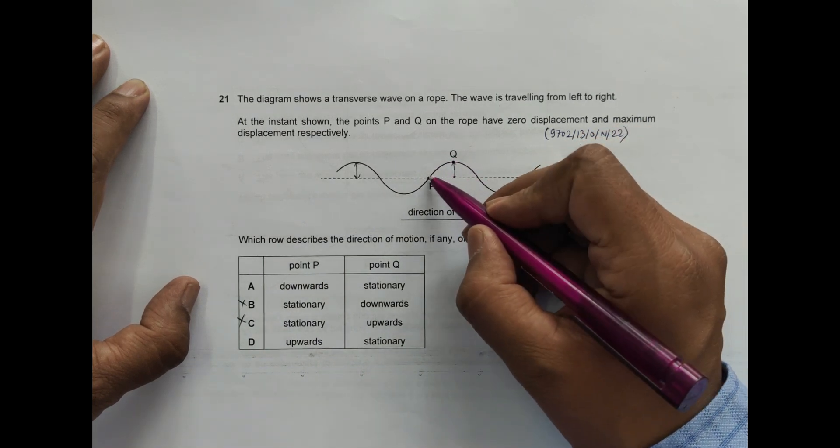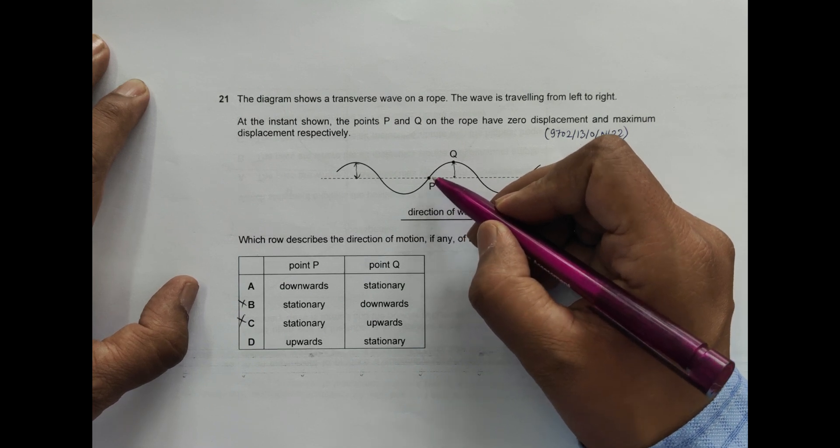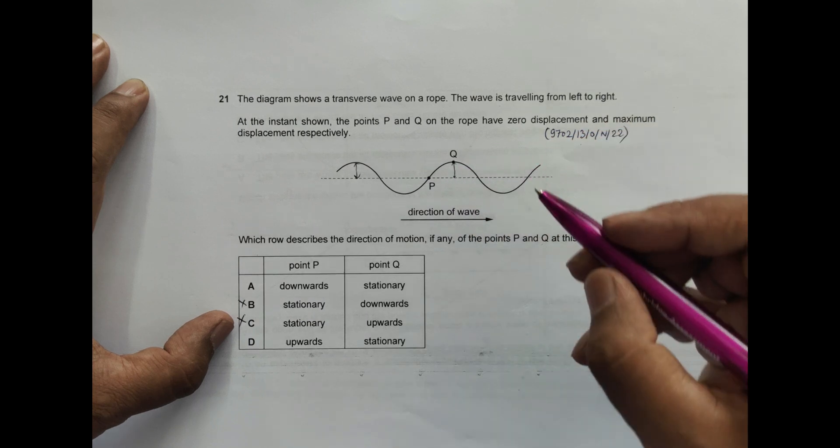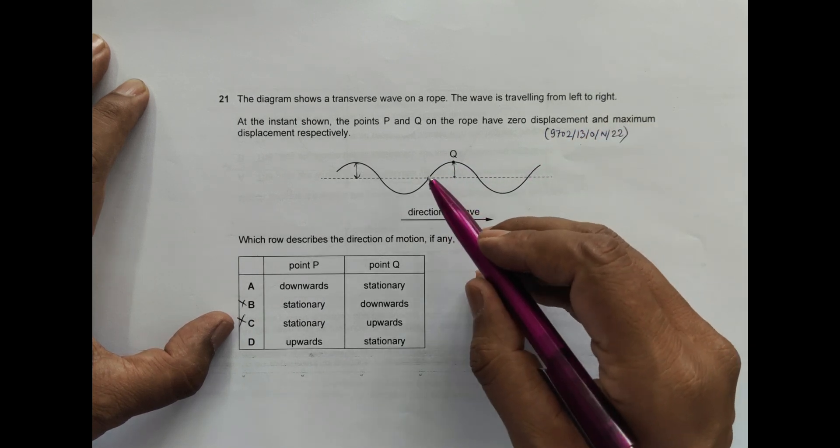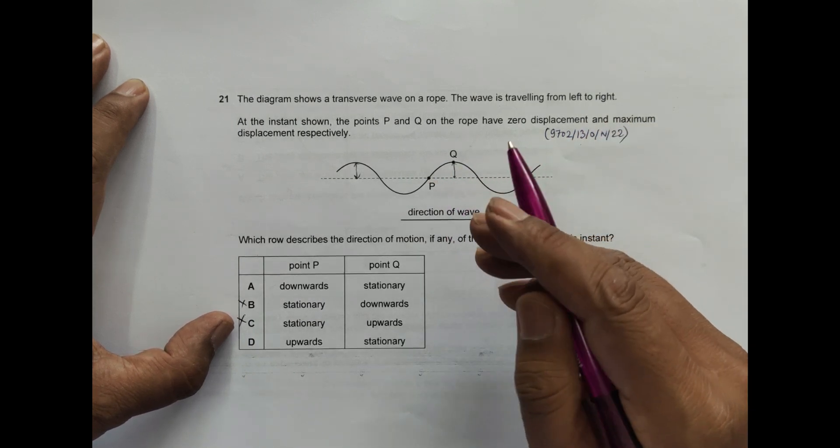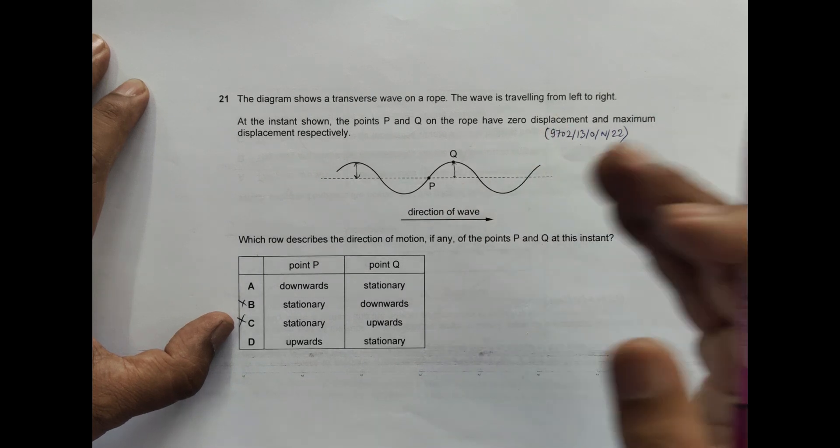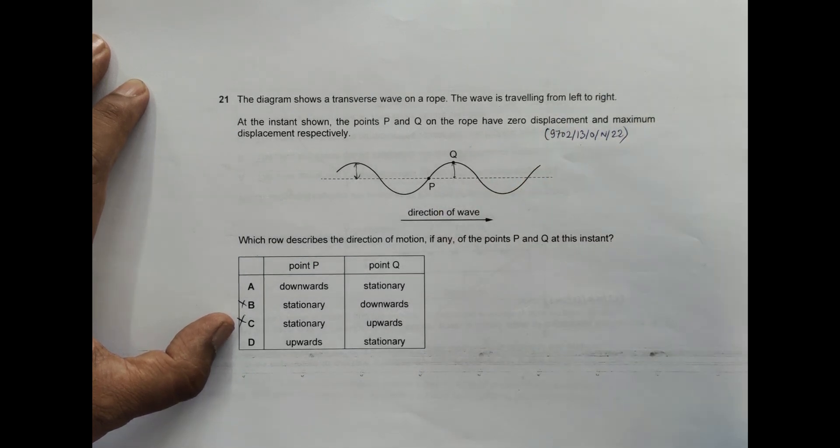The point P here should be moving with a very high velocity, either up or down. We are not sure yet, so to make it sure, what I do is let me draw the wave after an instant, after a very short instant of this thing.